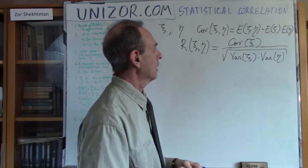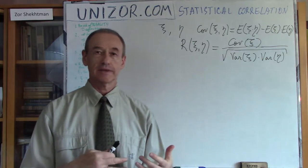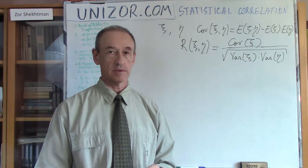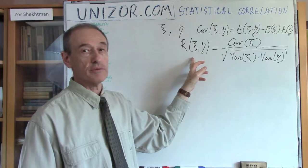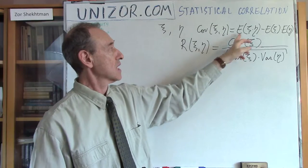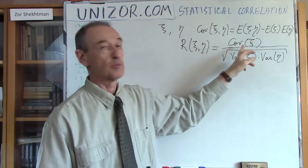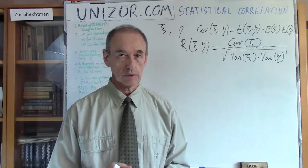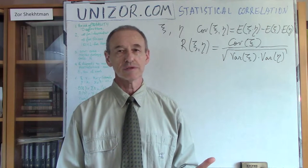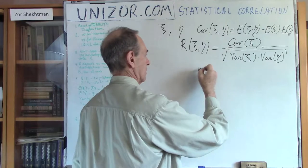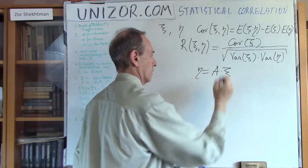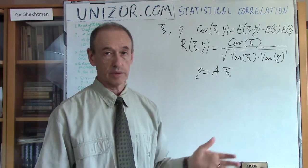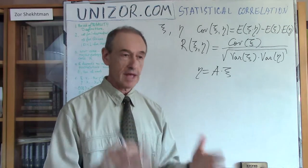Why did we scale the covariance? For one very simple reason. The correlation coefficient is still zero if the variables are independent, because the numerator equals zero. For ultimately dependent random variables — by which I mean one is proportional to the other, y = A·x, where A is some constant, including the particular case when A equals one — that is the ultimate dependency: one value completely determines another with no randomness.